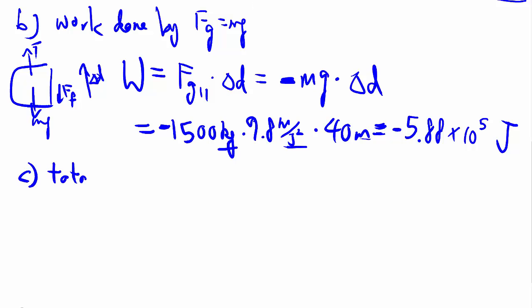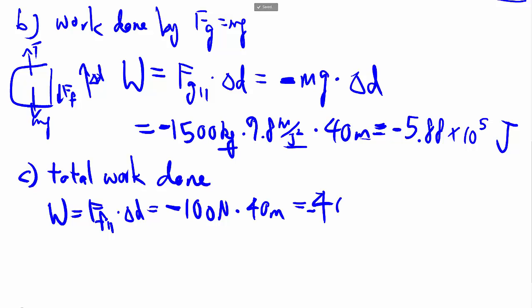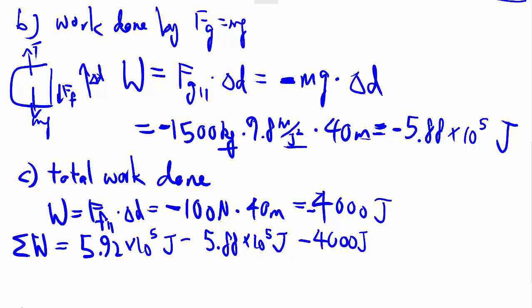And then finally, they want the total work that is done. So then you have to look at the third force as well, which is going to be my Ff, also considering just the parallel bit. This case, again, we're going opposite. So we have 100 newton negative multiplied by 40 meters. That's going to be negative 4,000 joules. So the total work, or the sum of all the work, would be equal to 0 joules.